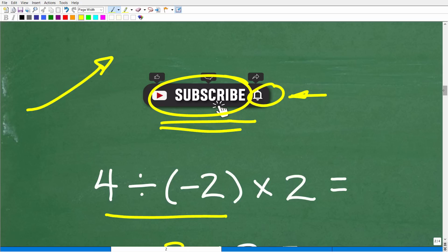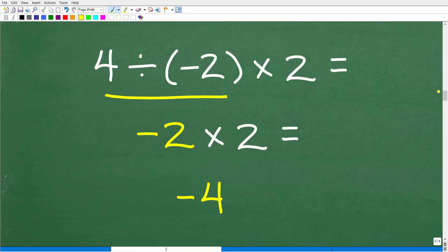Now, let's go ahead and finish this problem up. Now, not much work to do here because we're just talking about basic division and multiplication. So 4 divided by negative 2, positive, a positive number divided by a negative number is negative. So that's going to be negative 2 times a positive 2, which will give us negative 4 as the correct answer.